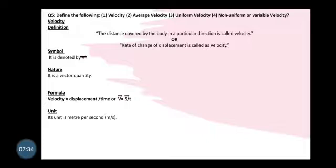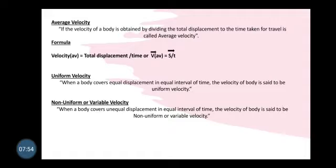Both V and S will have arrowheads placed above them because we are talking about velocity, which is a vector quantity. We always show vector quantities with arrowheads. Its unit is also meter per second, like speed.